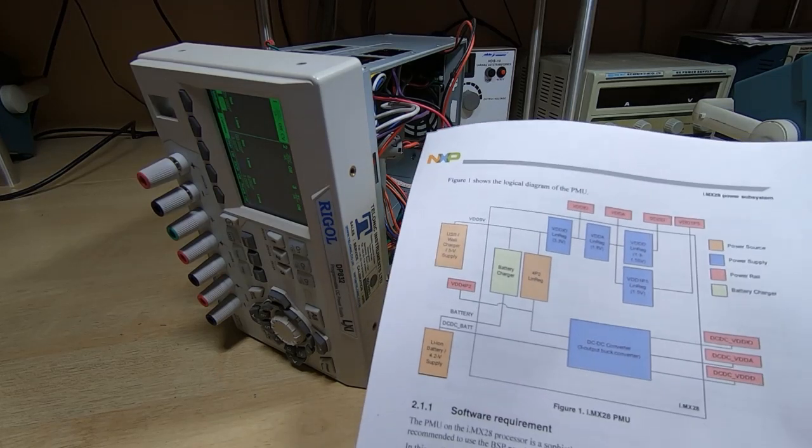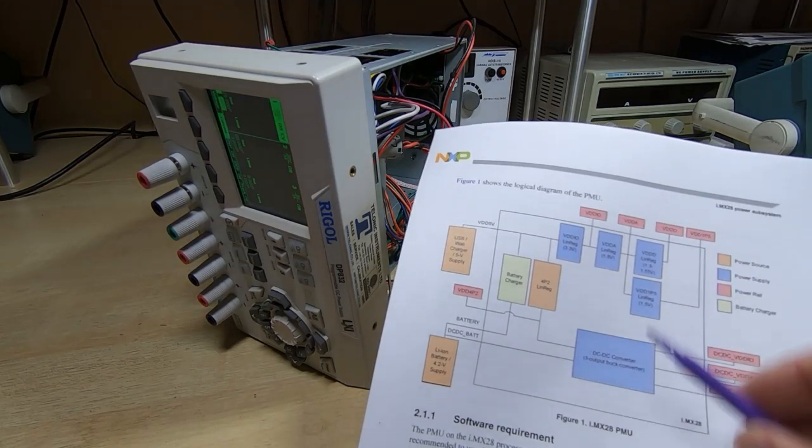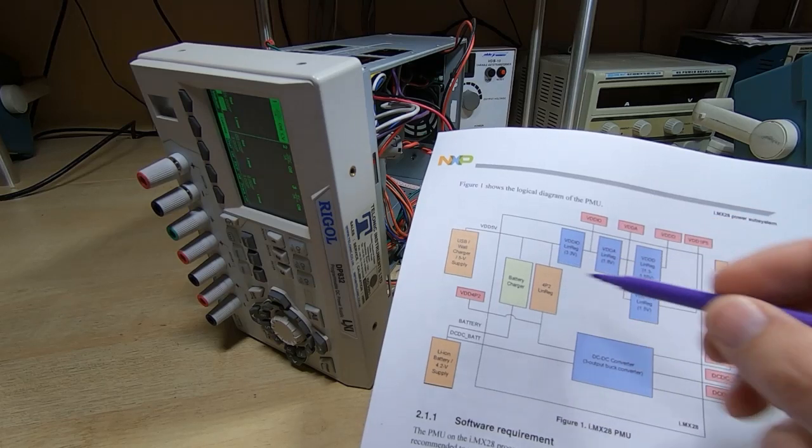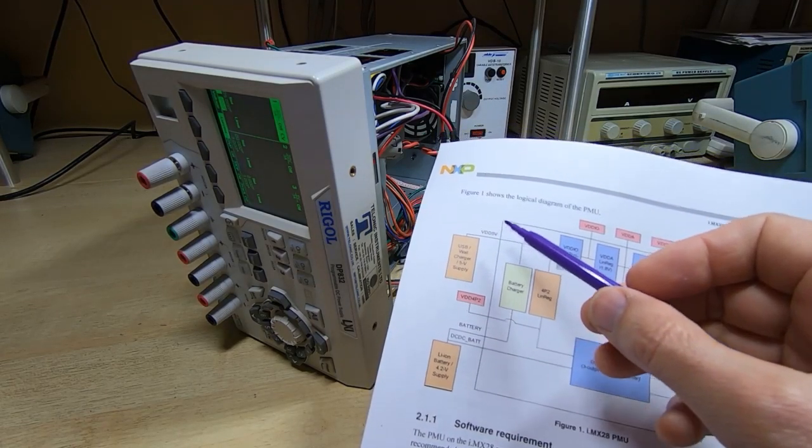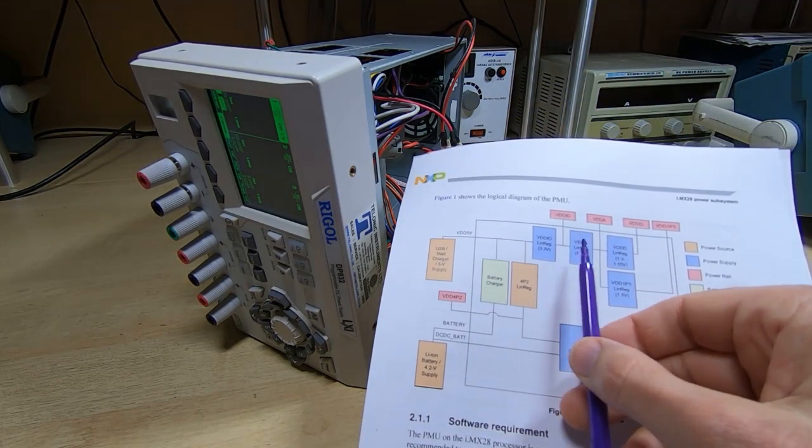Looking at it like this, you'd expect if you apply a five volt supply, which is how the Rigol's configured, then the five volt is used to directly power the daisy chain of regulators.